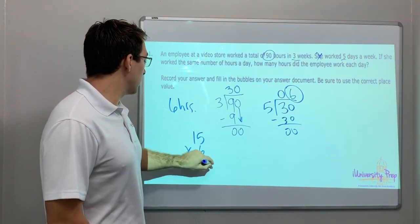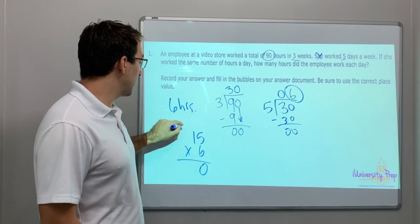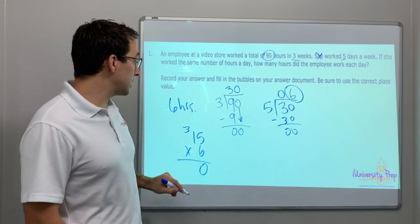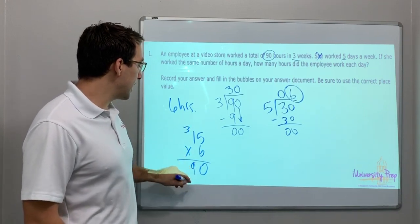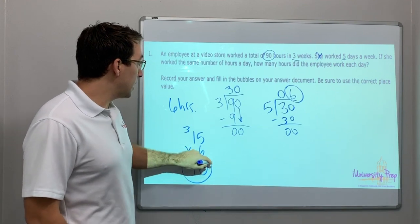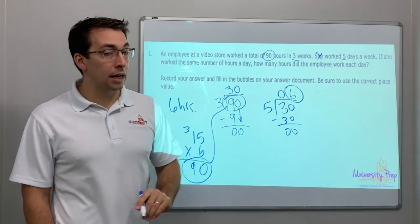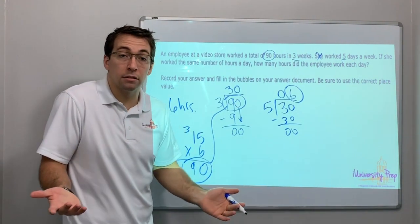So what is 15 days times six hours? Six times five is 30. Carry my three. Six times one is six. Plus three. 90. 90 equals 90. We checked our answer. There we go.